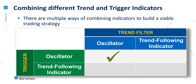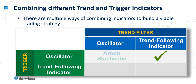The first option is to use an oscillator for both the trend filter and also for the trigger. For example, we might use the Aroon indicator in conjunction with the stochastic indicator, where the Aroon is telling us the trend and the stochastic is giving us the triggers. Alternatively, we might use a trend-following indicator for the trend category while sticking with an oscillator for the trigger — such as a triple moving average with the stochastic for the trigger.